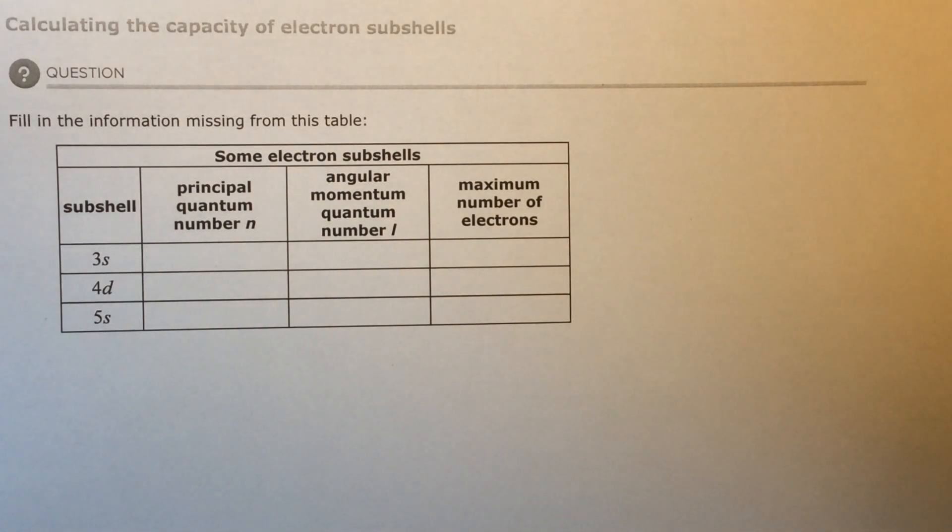A subshell is a local area that an electron happens to be in, or could possibly be in.